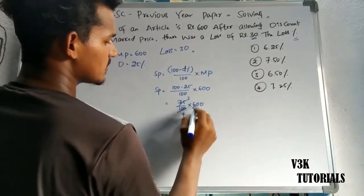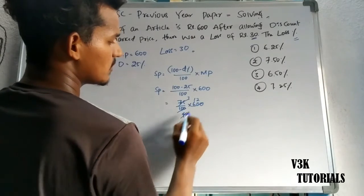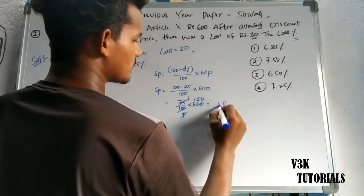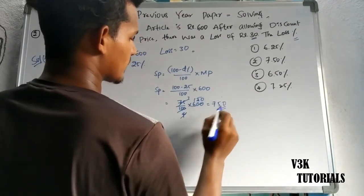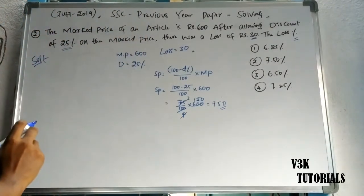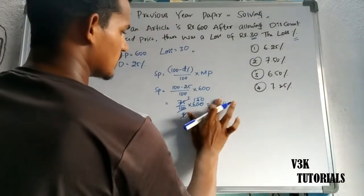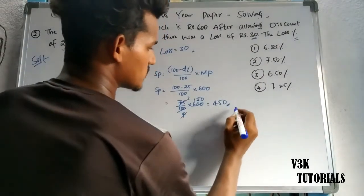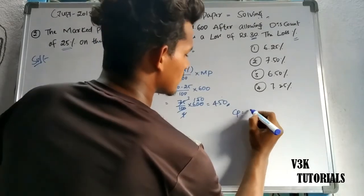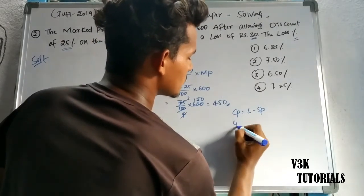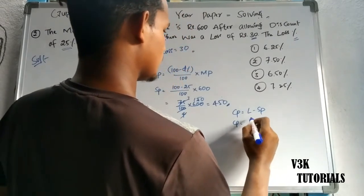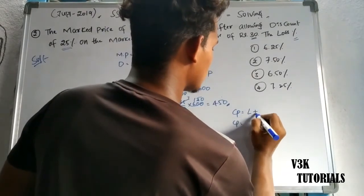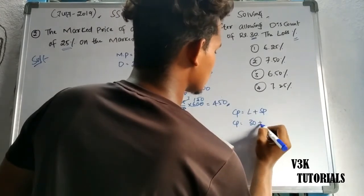Working through the arithmetic: 75 by 100 into 600 gives us 450. So the selling price is 450 rupees.